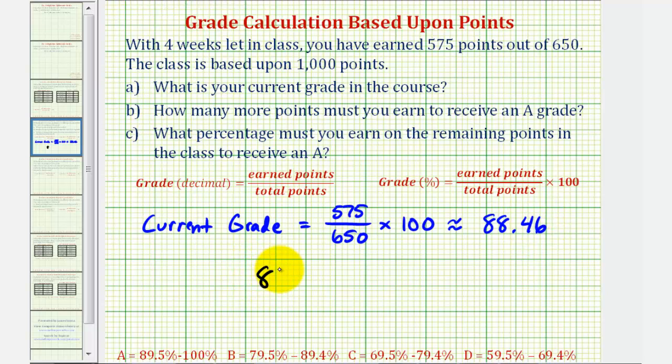Looking at our scale, this would be in the B range. So our goal here is to get this grade up to an A. Notice the lowest A is 89.5%. So let's answer question B on the next slide.